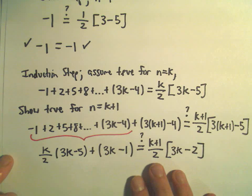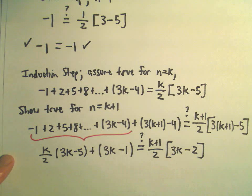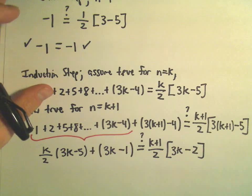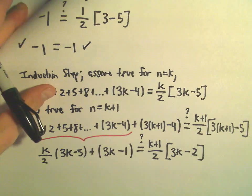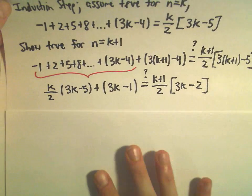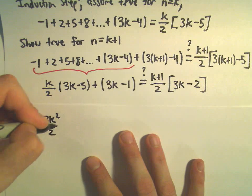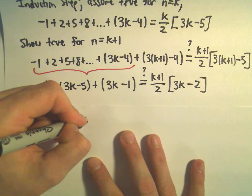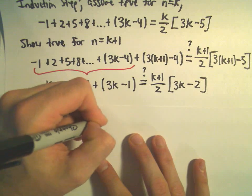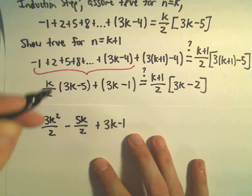There's a little bit of different algebra that you could do to justify this, hopefully without too much trouble. To me, maybe the most straightforward, but maybe a few more steps, I'm going to multiply out the left side. We'll get 3k squared over 2 minus 5k over 2 plus 3k minus 1.